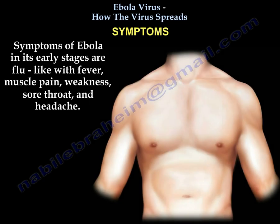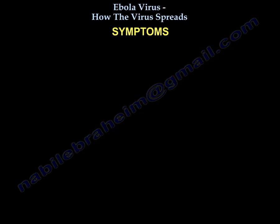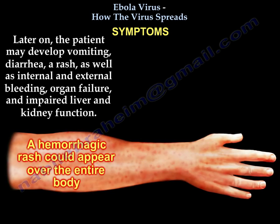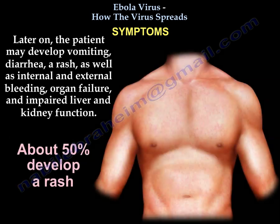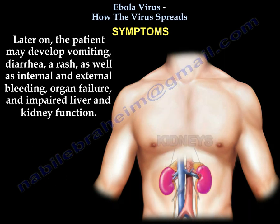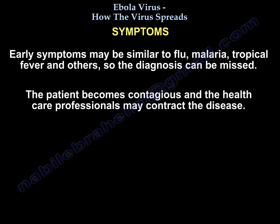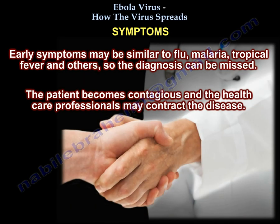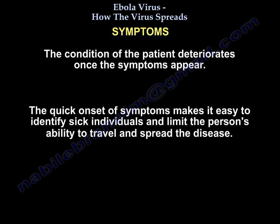Symptoms of Ebola in its early stages are flu-like: fever, muscle pain, weakness, sore throat, and headache. Later, the patient may develop vomiting, diarrhea, a rash, as well as internal and external bleeding, organ failure, and impaired liver and kidney function. Early symptoms may be similar to flu, malaria, or tropical fever, so the diagnosis can be missed. Once the patient becomes contagious, healthcare professionals may contract the disease. The quick onset of symptoms does make it easier to identify sick individuals and limit their ability to travel and spread the disease.